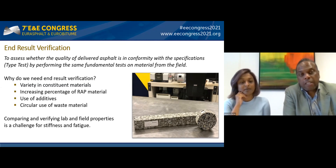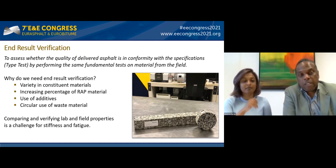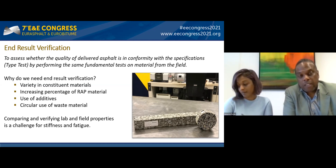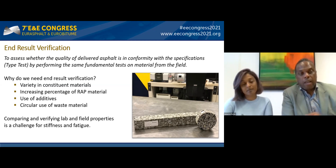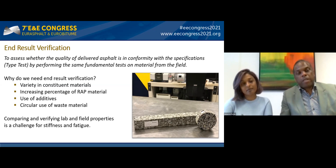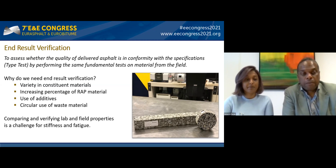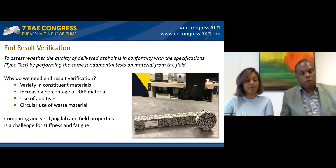Why do we need end result verification? There could be variability in constituent materials, an increasing percentage of RAP material, large-scale use of additives, and circular use of base material in new asphalt mixes — all of which can have a large influence on the mechanical properties of the asphalt. In the Netherlands, the four-point bending test is used in the type test and these results are also used in pavement design.